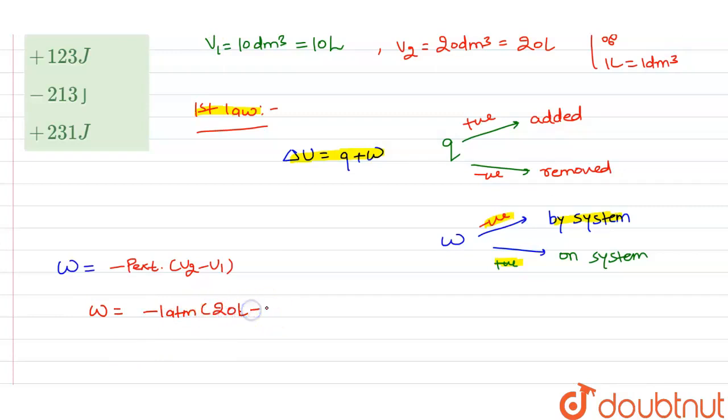So on solving it we get minus 1 atm multiply 10 liter. On solving it we get minus 10 liter atm, and we know that...